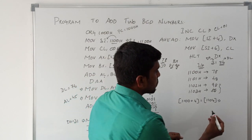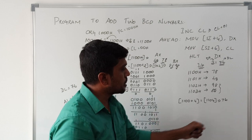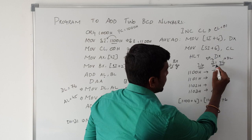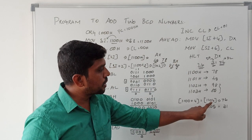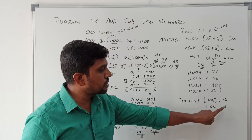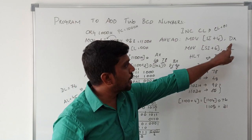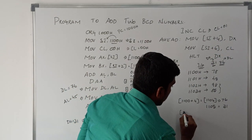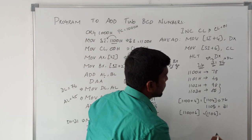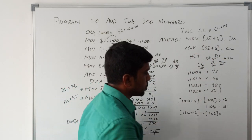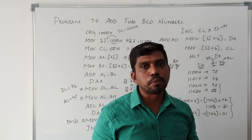In memory location 1104H, the DL content is transferred — data 76H is stored at 1104H. Next, 1105H stores the DH value 31H. After execution, memory location 1104H carries the data 76H and memory location 1105H carries the data 31H. The next instruction MOV [SI+6], CL transfers the carry value to memory location 1100H plus 6, which is 1106H. CL value is 01H, so this is the final result stored in memory.